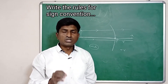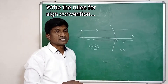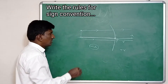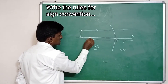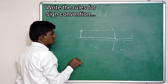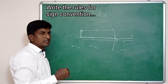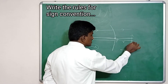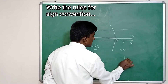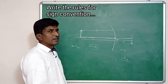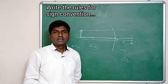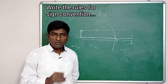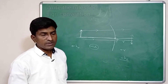The third sign convention: the height of an object or image above the principal axis is taken as positive. This is the principal axis. If the height is below the principal axis, then that height is taken as negative. Whatever the height, whether it is the object or image — if measured above the principal axis it is positive, and if below it is negative.